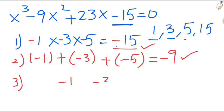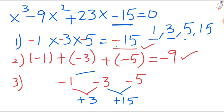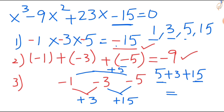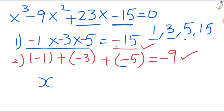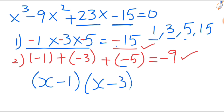Now check the third condition: multiply every two factors. Minus 1 times minus 3 is plus 3, minus 3 times minus 5 is plus 15, then minus 1 times minus 5 is plus 5. Add all this: 15 plus 5 is 20, 20 plus 3 is 23. It is the same as your x coefficient. So your three conditions are satisfied. Your factors are x minus 1, x minus 3, and x minus 5.